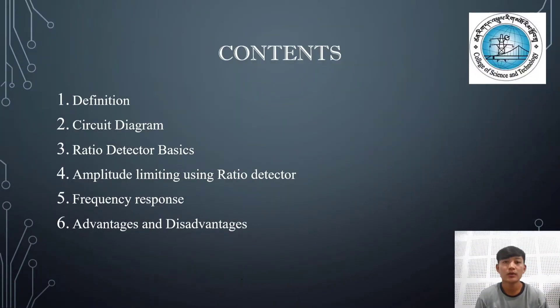Hello everyone. The contents that we will be discussing in this session are: number one, definition; number two, circuit diagram; number three, ratio detector basics; number four, amplitude limiting using ratio detector; number five, frequency response; and lastly, the advantages and disadvantages of ratio detector.